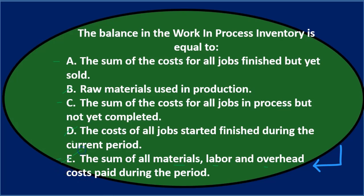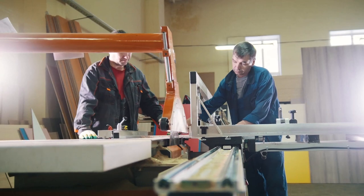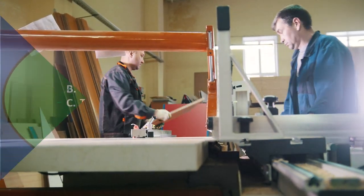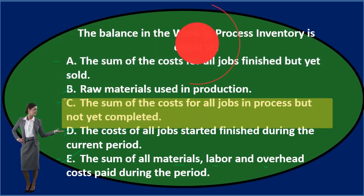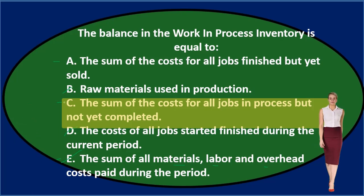Between A and C, we're looking for jobs still in process, and that's option C — the sum of costs for all jobs in process but not yet completed. If we add up all the jobs we're still working on that aren't completed, that should equal the work in process amount on the trial balance. The trial balance represents all open jobs supported by their job cost sheets. Option A — jobs finished but not yet sold — would be the finished goods account, not work in process. So the final answer is C.